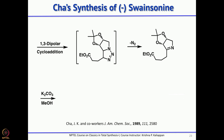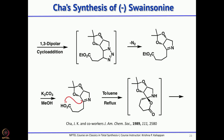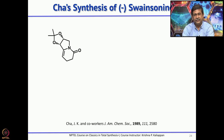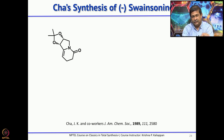Once the intramolecular dipolar cycloaddition takes place, it undergoes extrusion of nitrogen to form the imine. Once you have this imine, treatment with potassium carbonate in methanol hydrolyzes the ester to the corresponding carboxylic acid. On reflux, the carboxylic acid adds to the imine to form a spirolactone. This spirolactone on further heating undergoes rearrangement — cleavage, elimination, and then cyclization — in three steps, to give the bicyclic compound.